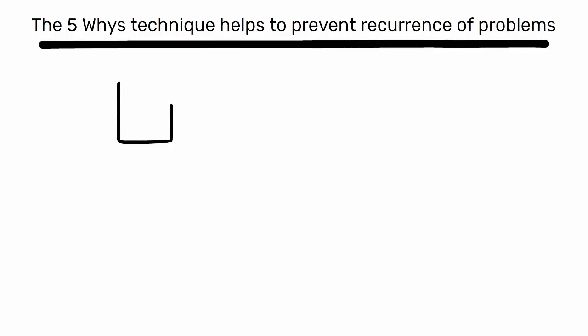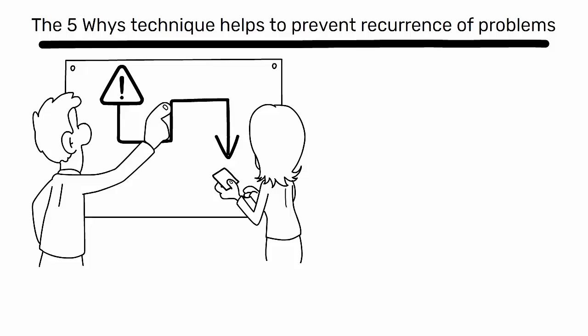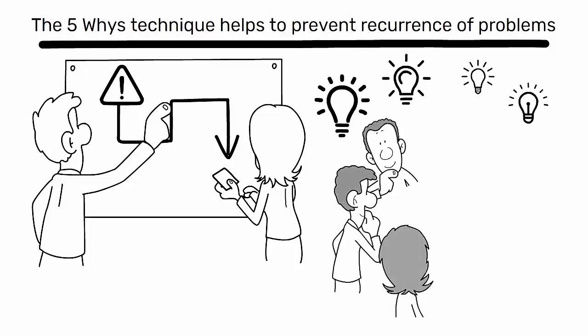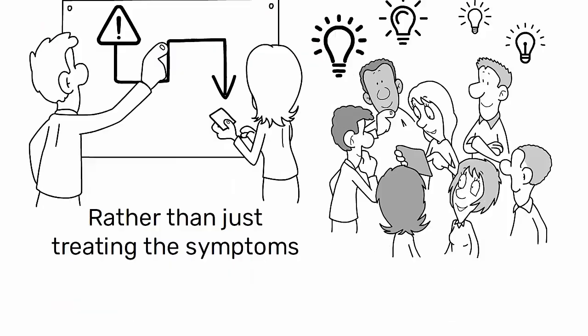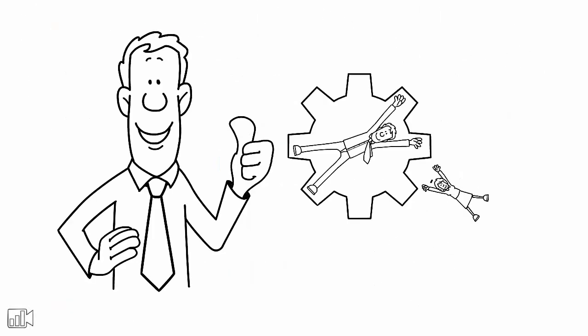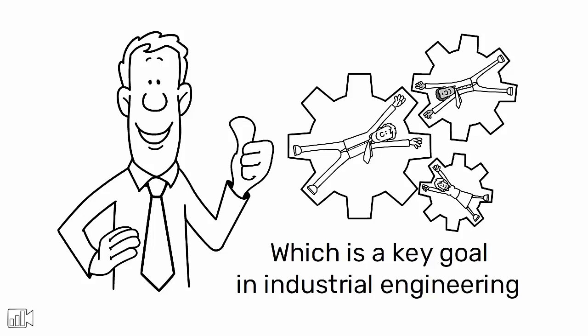Secondly, the 5-WISE technique helps to prevent recurrence of problems. By identifying and addressing the root cause, you can implement solutions that prevent the problem from happening again rather than just treating the symptoms. This leads to more robust and reliable processes, which is a key goal in industrial engineering.